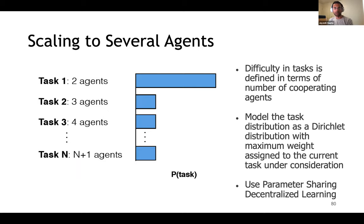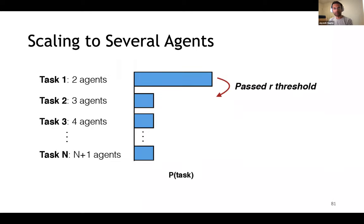With this simple insight, the difficulty of a task can be defined by the number of agents in the system, and we notice a natural curriculum to this problem. We model the task distribution with maximum weight assigned to the current task. We define an average return threshold R and start with maximum weight on the simplest task, here at the two-agent problem. Once this threshold is crossed, we change the task distribution so that the maximum weight is on the next task in the difficulty levels.